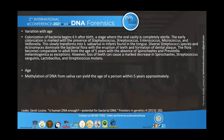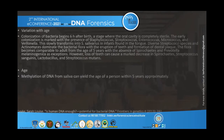In infants, diverse Streptococcus species and Actinomyces dominate the bacterial flora with eruption of teeth and formation of dental plaque. Flora becomes comparable to adults from age five years, with the absence of spirochetes and Prevotella melaninogenica as exceptions. Loss of teeth can cause a marked decrease in spirochetes, Streptococcus sanguinis, Lactobacillus, and Bacillus. Age by methylation of DNA from saliva can yield the age of a person within approximately five years.